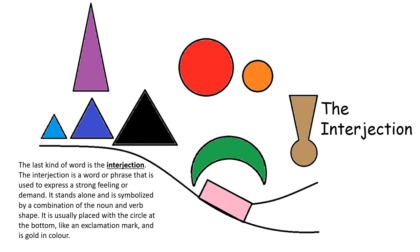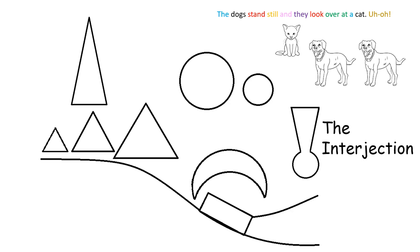The last kind of word is the interjection. The interjection is a word or phrase that is used to express a strong feeling or demand. It stands alone and is symbolized by a combination of the noun and verb shape. It is usually placed with the circle at the bottom, like an exclamation mark, and is gold in color. You can see here that I've added uh-oh as a standalone sentence. It stands alone and expresses the emotion of my wondering what will happen when those two dogs see that cat. Therefore, the words uh-oh are an interjection.